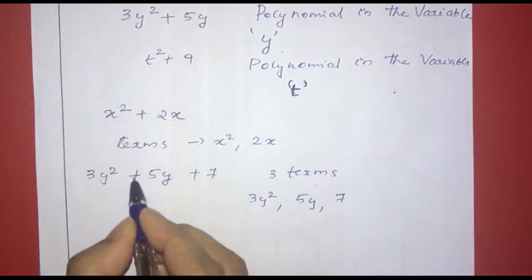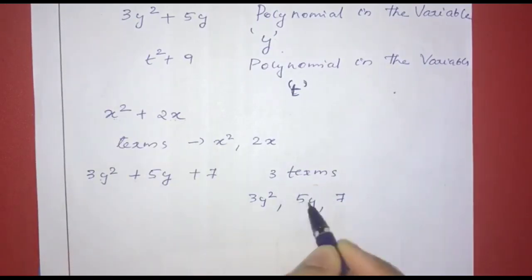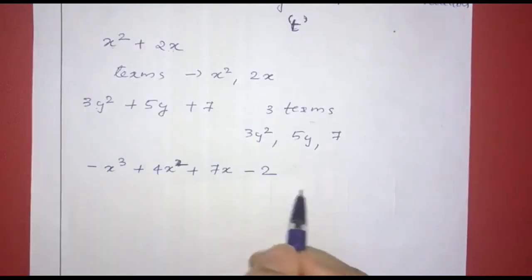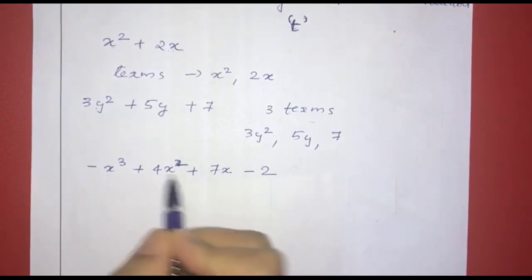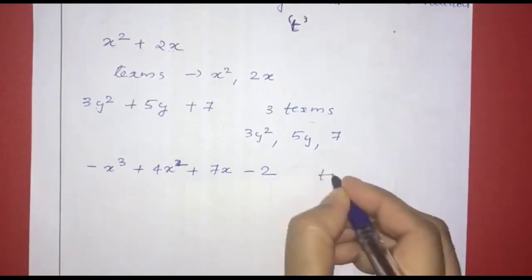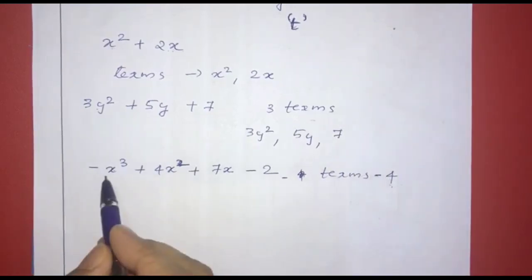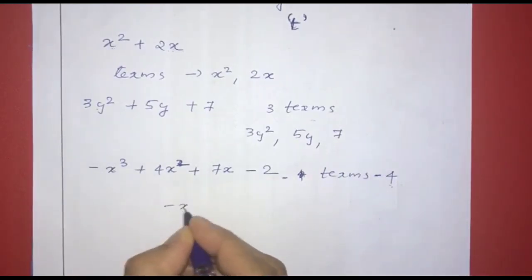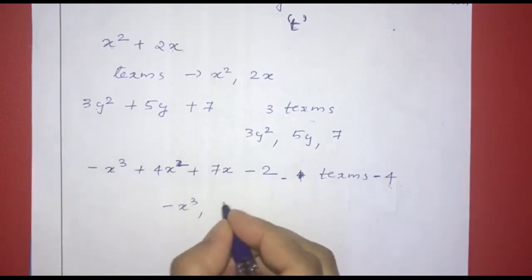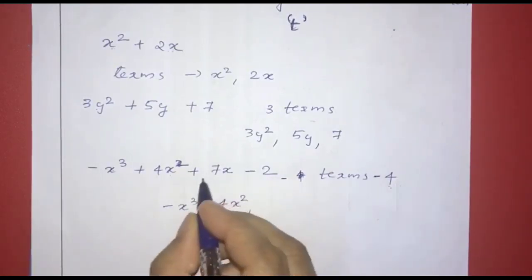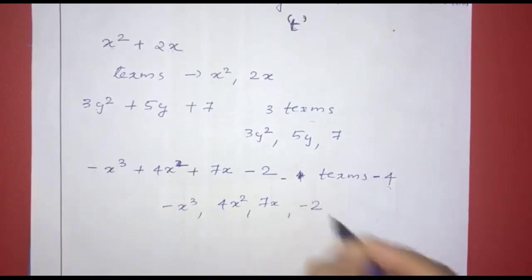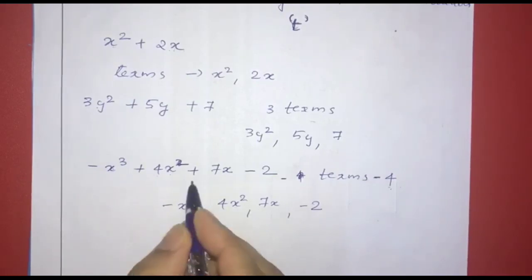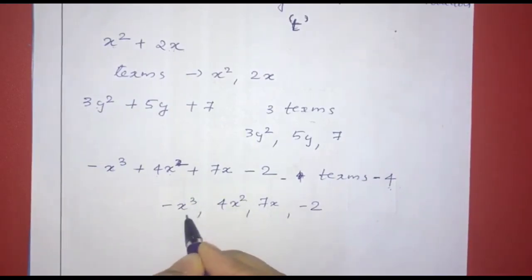If you take terms, each term will have a positive or negative sign. For example, in x raised to 3 minus x squared plus 4x plus 7x minus 2, how many terms are there? 1, 2, 3, 4 — that is 4 terms. The first term is x raised to 3, next minus x squared, next 4x, next 7x, and next minus 2.